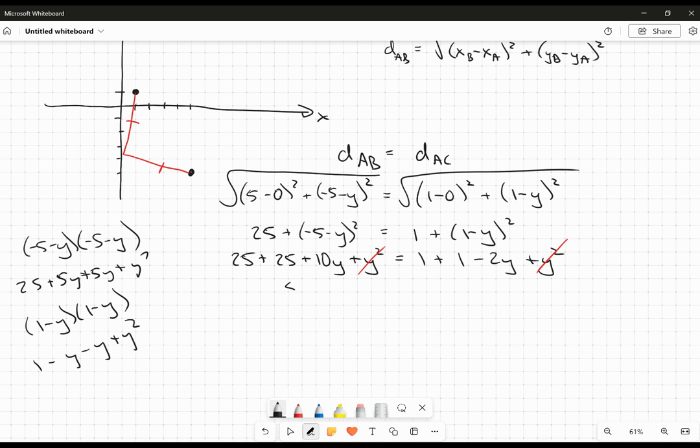On the left-hand side, this becomes 50 plus 10y. On the right-hand side, this becomes 2 minus 2y. Well, let's bring the y terms over. So, it's going to be 12y is going to equal, and when I bring the 50 over, 2 minus 50 is negative 48. And I'm going to get that y is equal to, when I divide that out, negative 4.